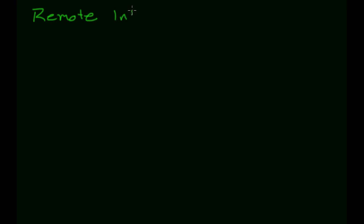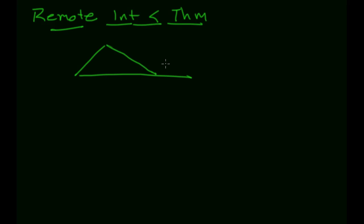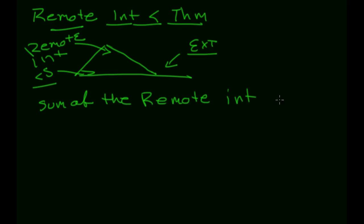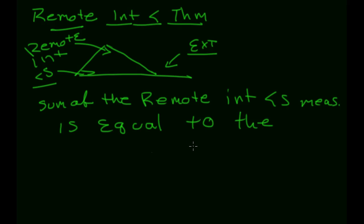The last concept is the Remote Interior Angles Theorem. If I have a triangle with a tail — creating an exterior angle — the remote interior angles are the two angles inside the triangle that are not adjacent to the exterior angle. This theorem says the sum of the remote interior angle measures equals the measure of the exterior angle.